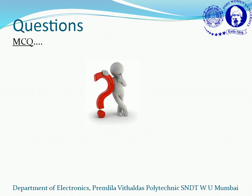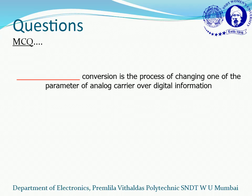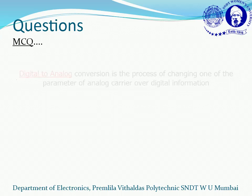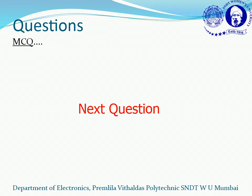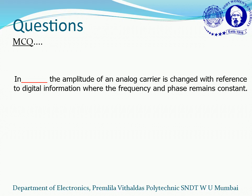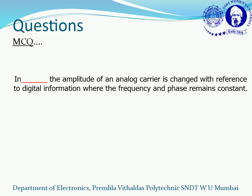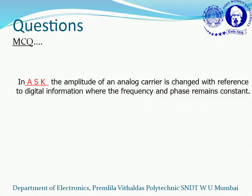Next question: dash conversion is the process of changing one parameter of an analog carrier according to digital information. Correct — D2A conversion is the process where any one parameter of an analog carrier is changed according to the digital information. Next question: in dash, the amplitude of an analog carrier changes with reference to digital information while frequency and phase remain constant. Correct — this happens in amplitude shift keying, ASK.